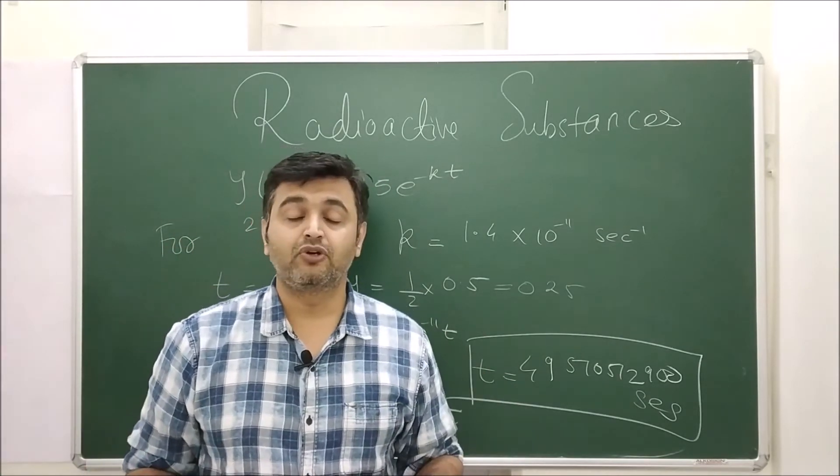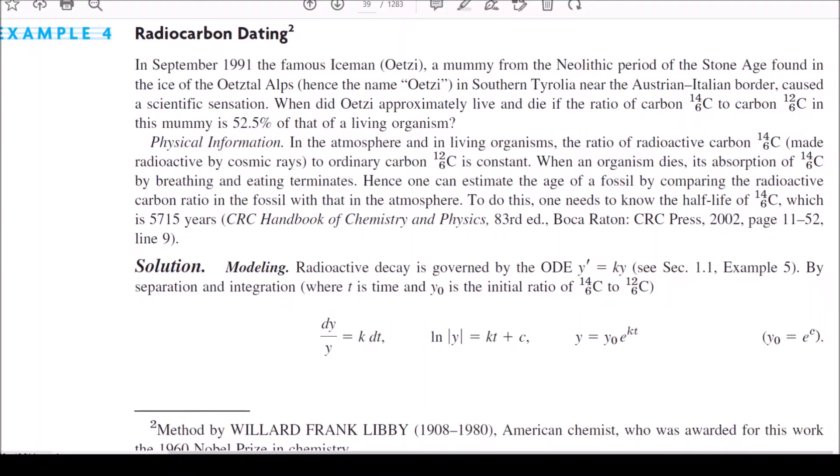Let me take one more example on radiocarbon dating. In September 1991, the famous ice man Oetzi, a mummy from Neolithic period of stone, was found in the ice of Oetzi Alps, hence the name Oetzi. Question is: when did Oetzi approximately live and die if the ratio of carbon-14 to carbon-12 is 52.5% of that of a living organism?